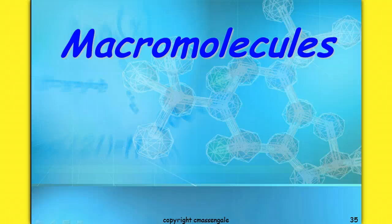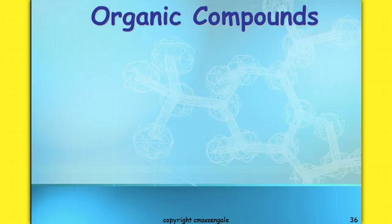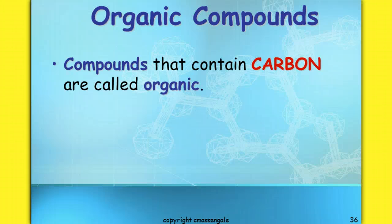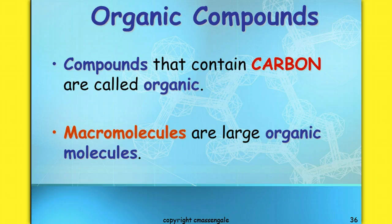We're going to start talking about the organic macromolecules that make up all living things. Organic compounds are compounds that contain carbon — that's what makes them organic. They're also considered to be macromolecules because they are large organic molecules. That prefix, macro, means big.